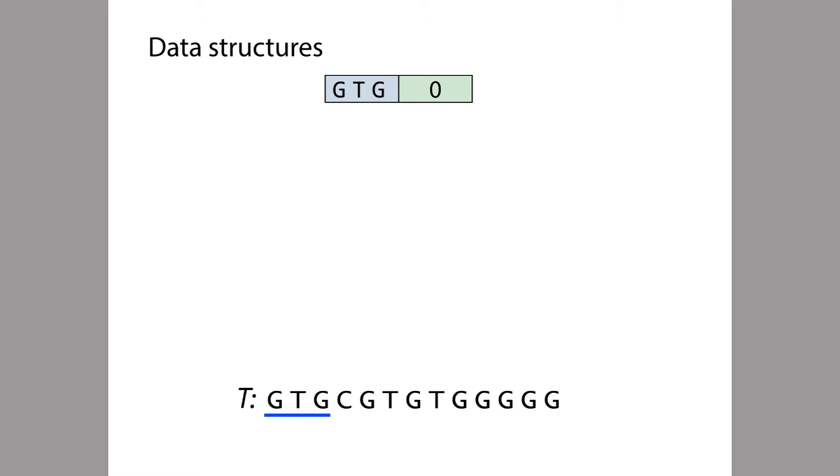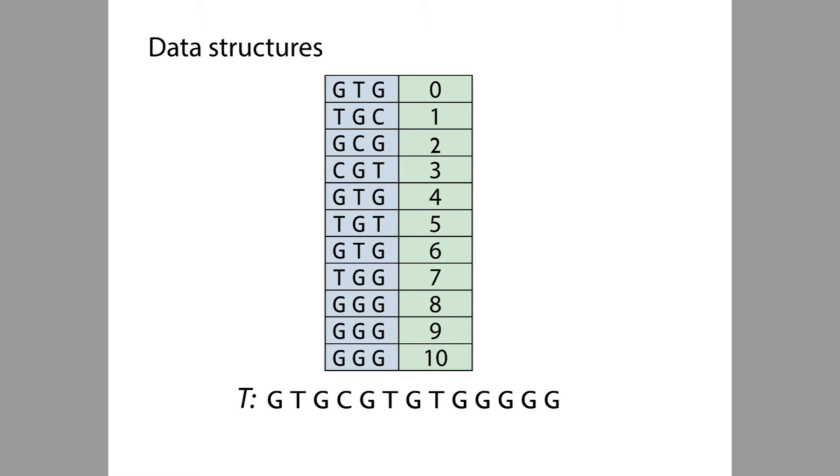So here at the top of this slide I have a key-value pair. The key is a 3-mer from the text T, the very first 3-mer, and the value is the offset where that 3-mer occurs. So we make a key-value pair for every 3-mer at every offset within T. There they all are. And then finally we order them. We put them in order alphabetically by 3-mer.